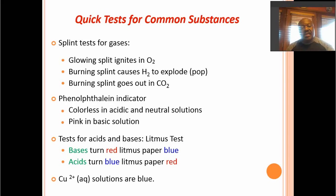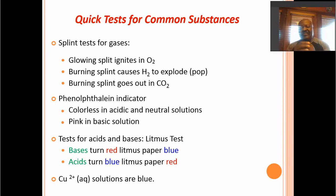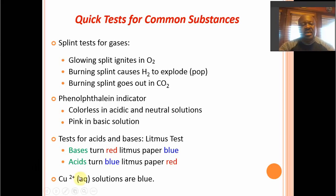If we produce a gas, we're going to test to identify it. If a glowing splint ignites and burns fervently, we conclude the gas is oxygen. If a burning splint causes an explosion — a pop you'll actually hear — then the gas is hydrogen reacting with oxygen in the air. And if the burning splint completely goes out, we will say the gas product is carbon dioxide.